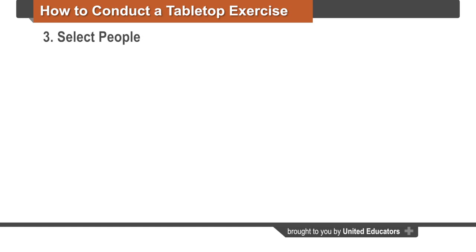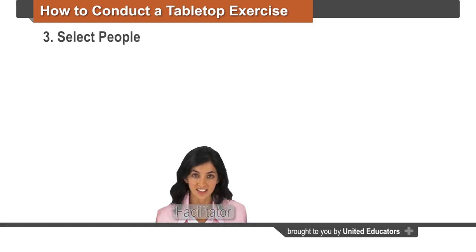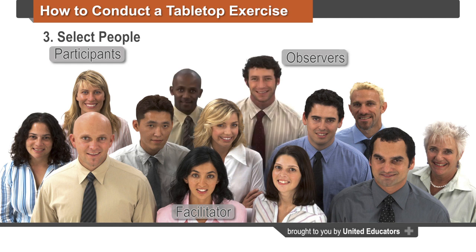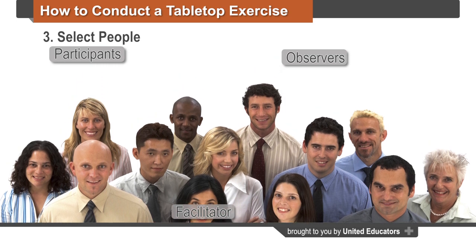Once you have a scenario, select the roles of those who will be involved in the exercise. First, choose a facilitator to lead the exercise — someone who is well-organized and experienced with leading a meeting or group exercise. Next, invite participants that are likely to respond or be heavily impacted by the scenario. For a scenario involving faculty misconduct, you might invite HR and the dean of the faculty. For a scenario involving an unstable student, you might invite the dean of students and director of counseling. Observers can also be used in a larger tabletop exercise to take notes and provide feedback during the post-exercise evaluation.